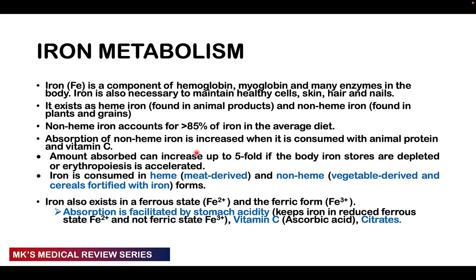Iron (chemical symbol Fe) is a component found in hemoglobin, myoglobin, and many enzymes. It is necessary for healthy cells, skin, hair, and nails — so iron deficiency causes changes in these. Iron exists in two main forms: heme iron (found in animal products) and non-heme iron (found in plants and grains). More than 85% of dietary iron comes from non-heme sources, and non-heme iron is harder to absorb than heme iron. Vegetarians are therefore more likely to develop iron deficiency.